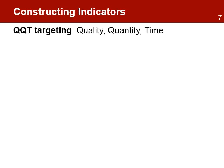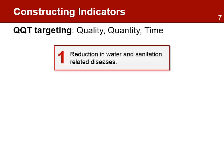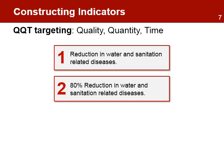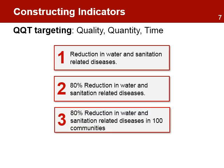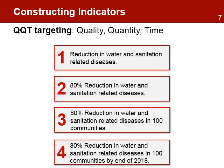The process to construct indicators: indicators should be measurable in terms of quality, quantity, and time. This is called QQT targeting and consists of four simple steps. It starts with a basic indicator sentence like 'reduction in water and sanitation related diseases.' Then we add quality: 'reduction by 80%.' Then we add quantity: 'in 100 communities.' And finally, we add time: 'by the year 2018.'